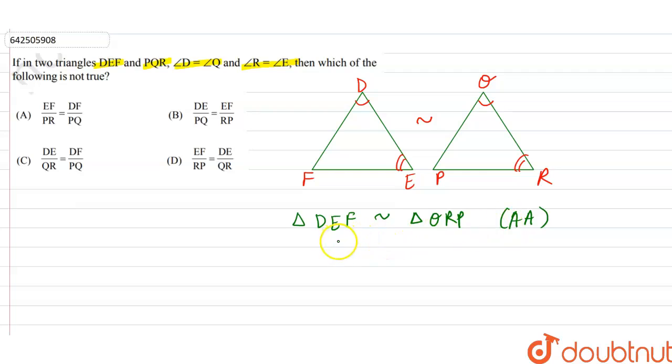By double A similarity criteria, also we can say that angle F will be equal to angle P, as corresponding angles of similar triangles are equal.